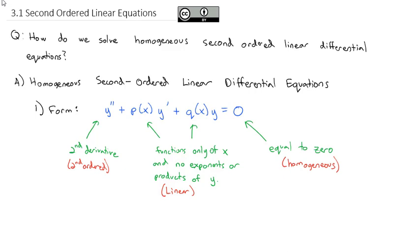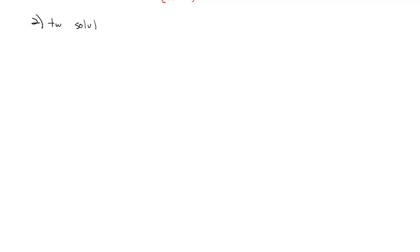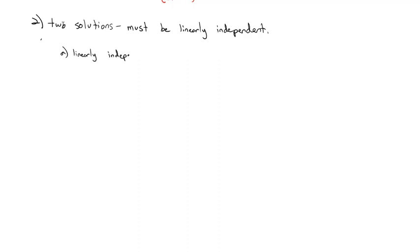So basically, we're solving problems of this form when we say homogeneous second-order linear differential equations. When we solve these problems, we're actually looking for two particular solutions. What does it mean to be linearly independent? If you took linear algebra, you'll recognize the phrase — it means the exact same thing here.